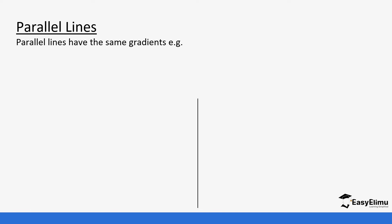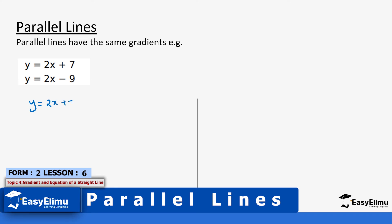For parallel lines, their gradients are usually the same. So if you get the gradient of one line and compare it to the gradient of another line, if these gradients are equal then we say that these lines are parallel. Let's take for example these two equations — two equations of two lines — and check if they have the same gradient, hence make the conclusion if they are parallel or not. The first equation is y = 2x + 7.